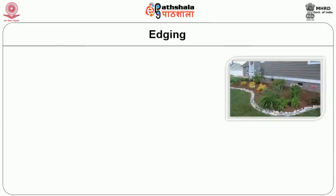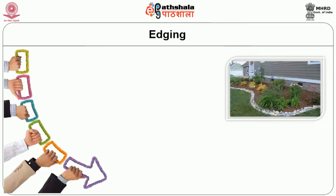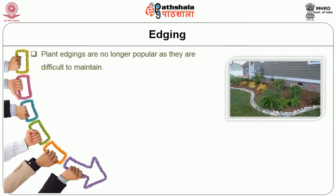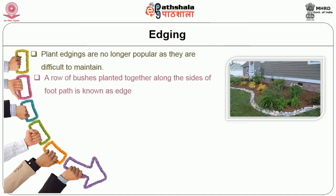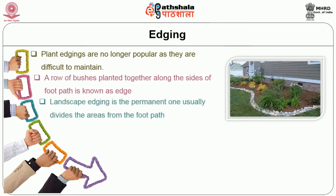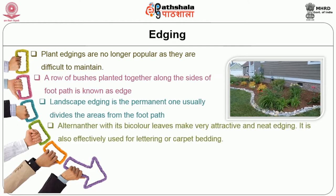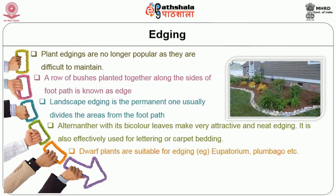The third construction element is edging. Edging is also an important construction phase. Plant edging is no longer popular as it is difficult to maintain. A row of bushes planted together along the sides of a footpath is known as an edge. Landscape edging is the permanent type and usually divides the area from the footpath. Alternanthera with its bicolor leaves makes very attractive and neat edging, and is also effectively used for lettering or carpet bedding. Dwarf plants such as Eupatorium and Plumbago are suitable for edging.